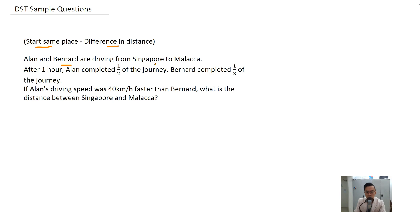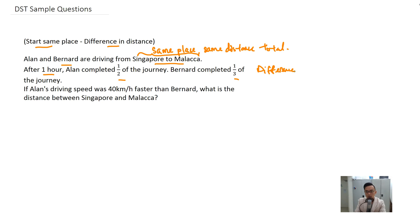Alan and Bernard are driving from Singapore to Malacca, so that means it's the same place with the same total distance. After one hour, Alan completed half of the journey and Bernard completed one third of the journey, so there will be a difference in distance. If Alan's driving speed was 40 kilometers per hour faster than Bernard, what is the distance between Singapore and Malaysia?